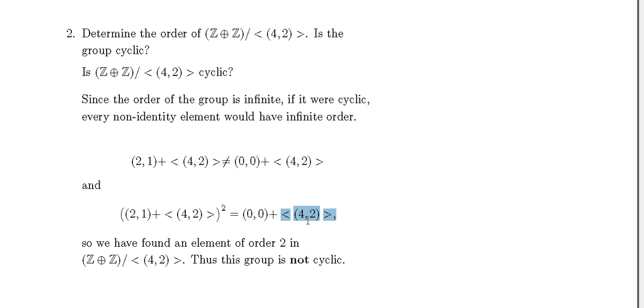So if we have an element of order 2 in the quotient group, and the group is of infinite order, this group is not cyclic — since in an infinite cyclic group every non-identity element has infinite order.